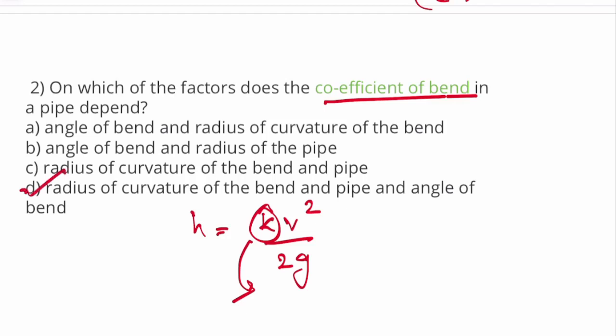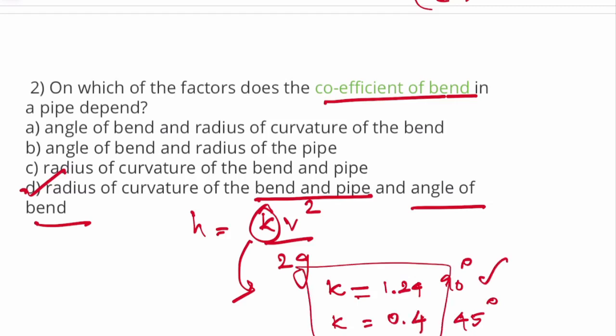Actually the answer is D: radius of curvature of bend and pipe, and angle of bend. For a 90 degree bend it is equal to 1.24. Suppose the bend angle is 45 degrees, then it is equal to 0.4. So k value varies, it depends on angle of bend and radius of curvature of bend and pipe.